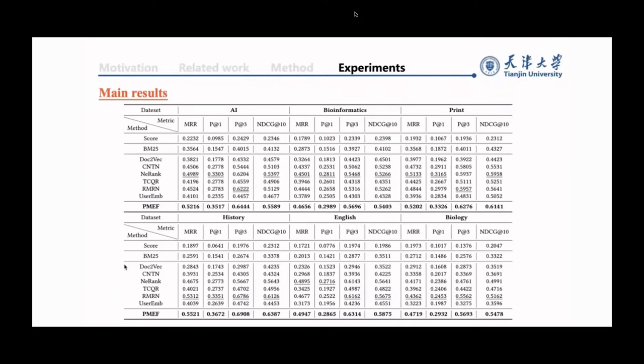First of all, it is not surprising that the neural network-based methods Doc2Vec, CNTN, NE-Rank, TCQR, MNR, and USER-BIF consistently outperform traditional methods CQARank and PMR overall datasets. The reason is that neural networks have powerful representation capabilities and can capture deep semantic information from question content to model questions, while traditional methods may not.